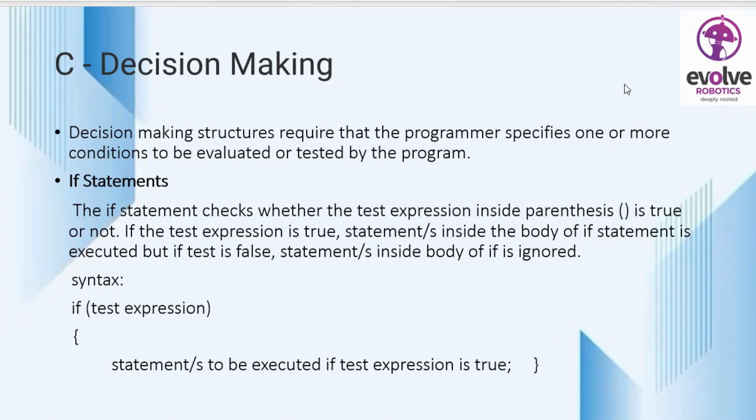In this video I'm going to discuss decision making in C programming. Decision making statements decide the direction and flow of the program. They are also known as conditional statements because they specify conditions with boolean expressions evaluated to true or false. If the condition is true, a given block of code will be executed. If the condition is false, the block of code will not be executed.